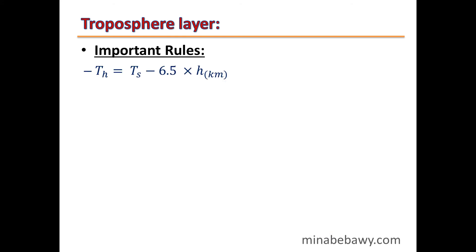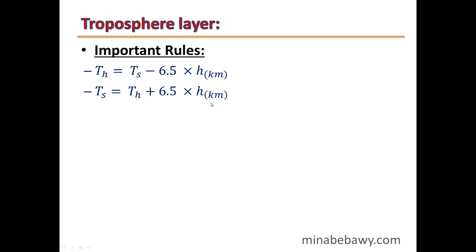Important formula: To calculate the temperature at a certain height, such as the top of a mountain, use: Temperature at top = Temperature at sea level − (6.5 × height in km). Conversely, to find the temperature at sea level: Temperature at bottom = Temperature at top + (6.5 × height in km). This is because temperature decreases in the Troposphere at 6.5°C per km.